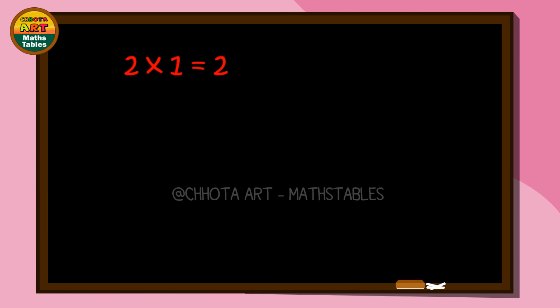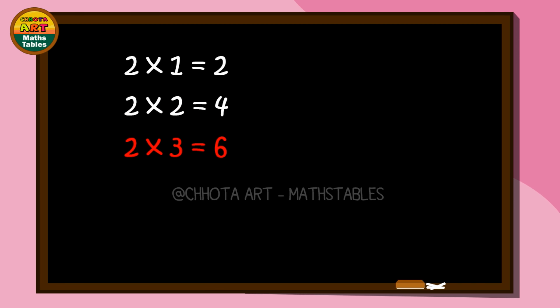Two ones are two, two ones are two. Two twos are four, two twos are four. Two threes are six, two threes are six. Two fours are eight, two fours are eight.